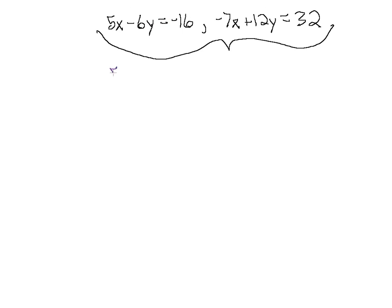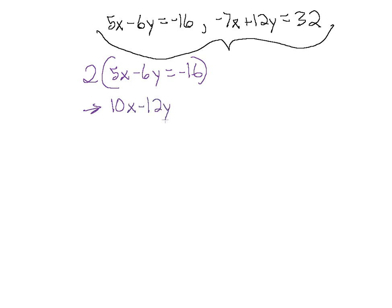So if we take equation 1, we can make the coefficient of y the opposite of the coefficient of y in equation 2 by multiplying through by positive 2. That gives us the new equation 10x minus 12y equals minus 32.